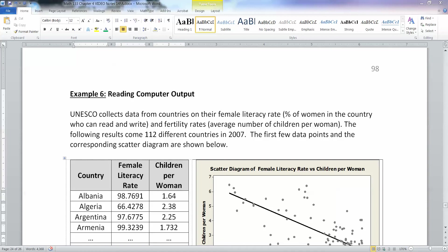This last example encompasses almost all of Chapter 4 into just a couple pages. So it has a lot of things going on, so we'll have to pay really close attention. Alright, let's read. The UNESCO organization, that's a United Nations organization, collects data from countries on their female literacy rate, which is the percentage of women in the country who can read and write, and fertility rates, so the average number of children per woman. The following results come from 112 different countries in 2007.